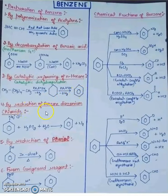By reduction of benzene diazonium chloride. This is benzene diazonium chloride, with H2SO4 and H2O, and this is your benzene.